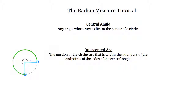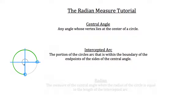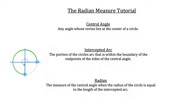We say it's inside because this is the angle we're referring to — not the 90 degrees left out, but that 270 degrees all the way around inside the circle. The radian is the measure of the central angle when the radius of the circle is equal to the length of the intercepted arc.